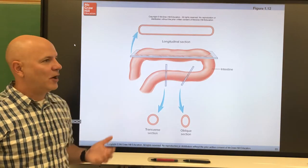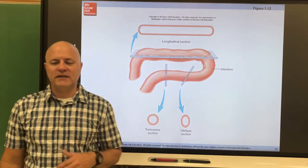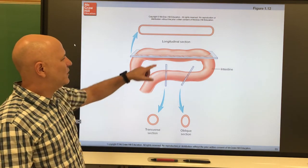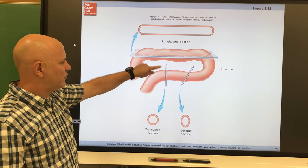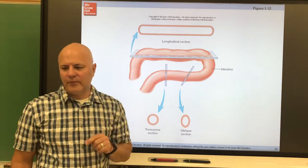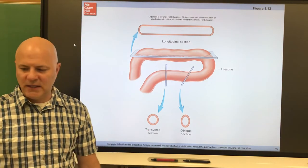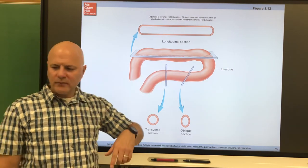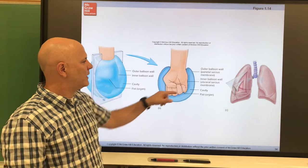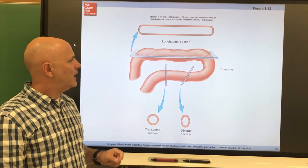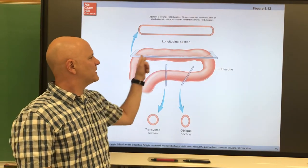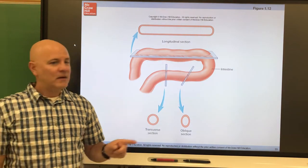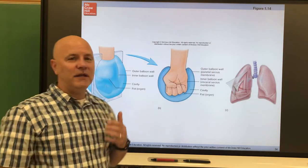For organ cuts, there are three types. A cross section (the book calls it a transverse section) is essentially a horizontal cut through the organ. An oblique section is an angled cut. A longitudinal section is a lengthwise cut down the organ.